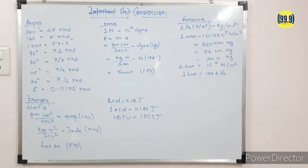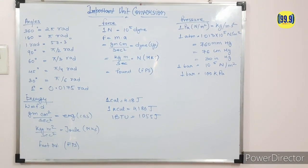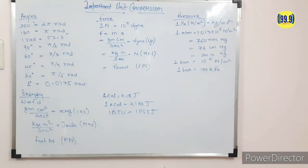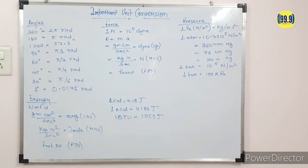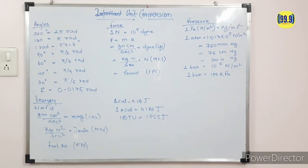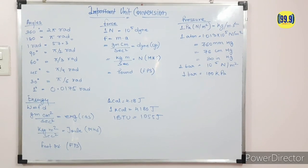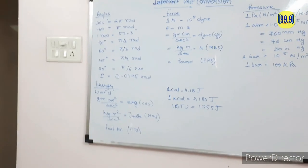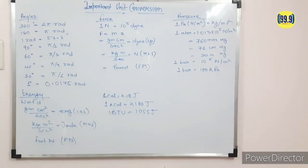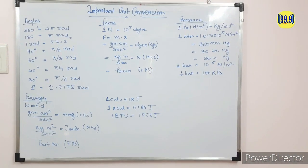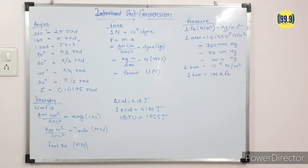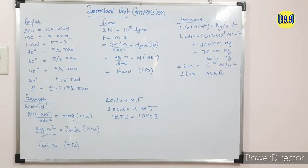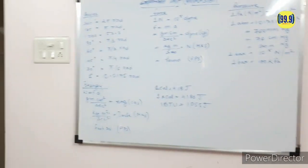Now come to the force unit. The SI unit of force is Newton. 1 Newton is equal to 10⁵ dyne. Since force equals mass times acceleration, dyne is the CGS unit equal to gram·centimeter per second square. The force unit in MKS is kg·meter per second squared, also called Newton. In FPS it is pound.